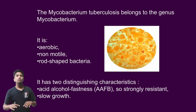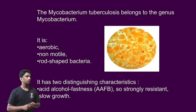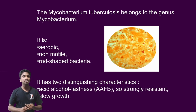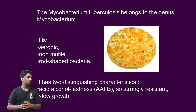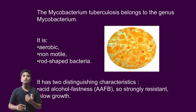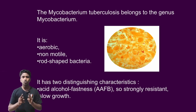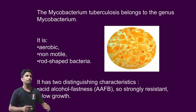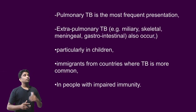The features of Mycobacterium tuberculosis: it is aerobic, non-motile, and rod-shaped bacilli. It has two distinct characteristics — it is acid-fast and alcohol-fast, so it is stained using acid-fast bacilli (AFB) staining rather than Gram staining. It also has slow growth. These are two distinguished characteristics of Mycobacterium tuberculosis.